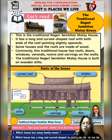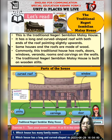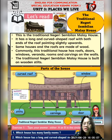Some houses and the roofs are made of wood. Commonly this traditional house has roofs, doors, windows, veranda, rooms and carvings on the walls. Windows ialah tingkap. Veranda ialah anjung. Carving ni maksudnya ukiran. The traditional Negeri Sembilan Malay house is built on wooden stilts. Kalau kamu perhatikan setiap rumah tradisional ni dia dibina ada stilts - maksudnya dia ada tiang ni. Steel ni ialah tiang. Rumah dia tak macam sekarang - ini dia ada naik atas sikit.